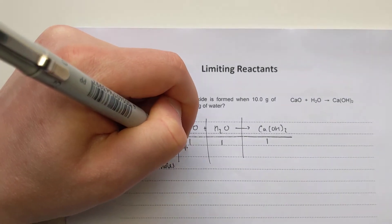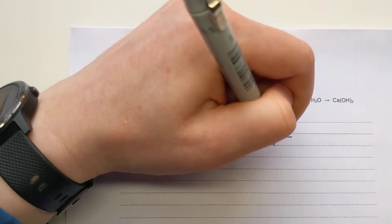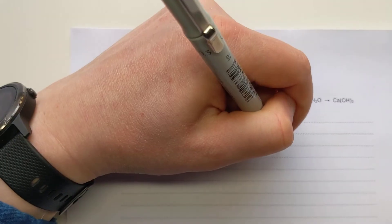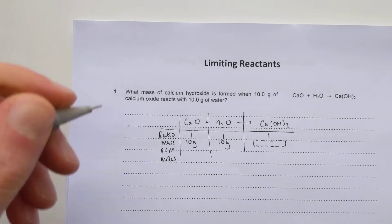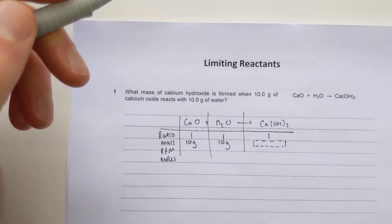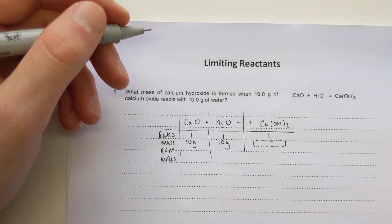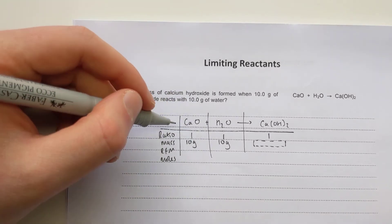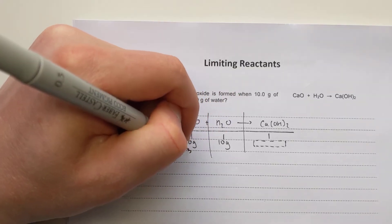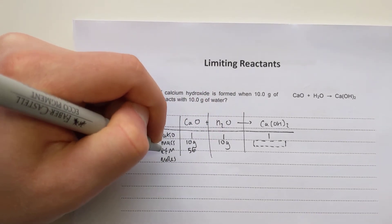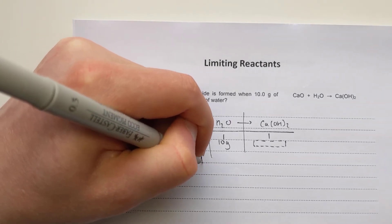The masses we've been given are 10 grams of calcium oxide and 10 grams of water, and we're trying to find out the mass of calcium hydroxide. My first step is to work out the moles of both reactants because I need to compare them. The RFM of calcium oxide is 40 plus 16, which is 56. Moles equals mass divided by RFM, so 10 over 56 gives 0.179 moles.